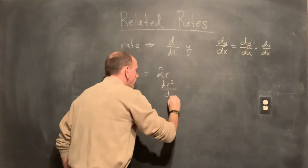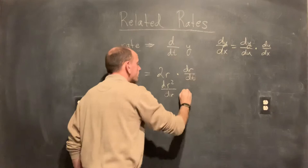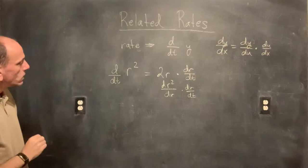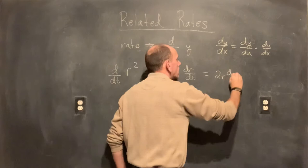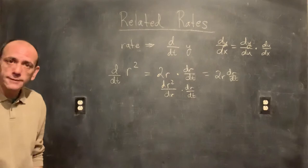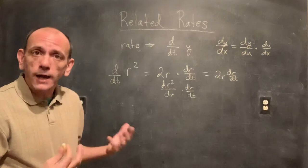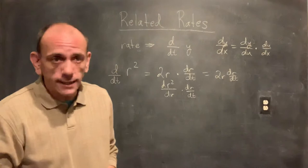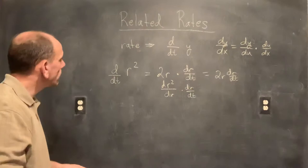So 2r — that's the derivative of r squared with respect to r — but then I need to multiply by dr/dt. So 2r·(dr/dt) is my derivative of r squared with respect to t. In order to actually calculate the value, I'm going to need both r and dr/dt — two things I'll need to plug in. That's how we're using the chain rule and implicit differentiation to get at these rates.